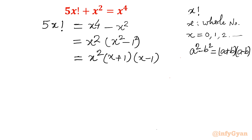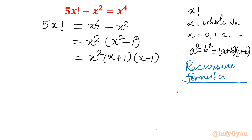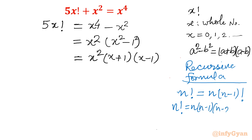Now for the LHS, I will expand using the recursive formula. In factorial notation, n! can be written recursively as n·(n-1)·(n-2)! and so on. So the left hand side becomes 5 times x·(x-1)·(x-2)!.